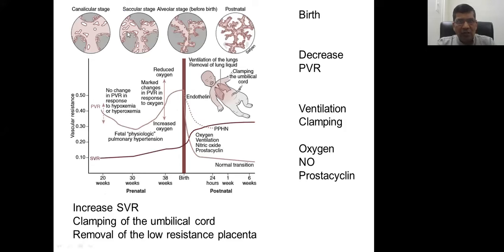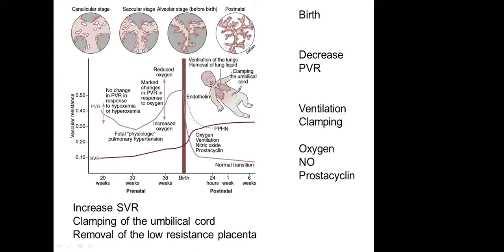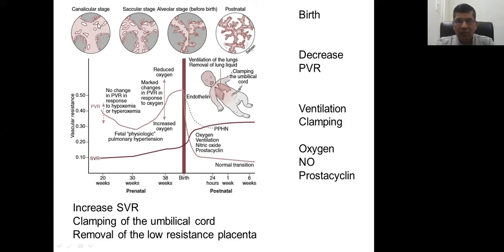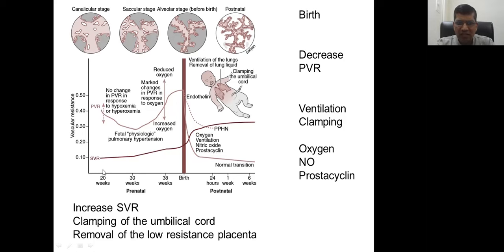Let's concentrate on fetal lung development. In the canalicular stage we have very small blood vessels, less cross-sectional area, and very high levels of vasoconstrictors with hardly any vasodilators. The first important concept: the fetus is in a state of physiological pulmonary hypertension — that is expected from the fetus and that is the need of the fetus.